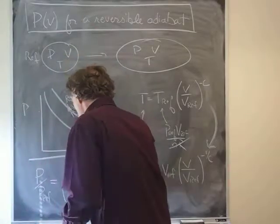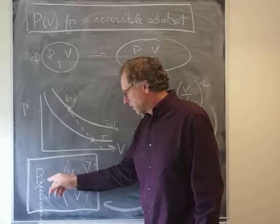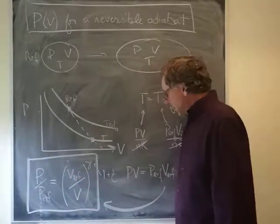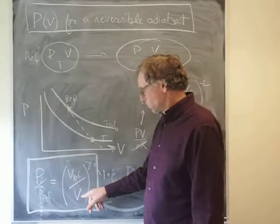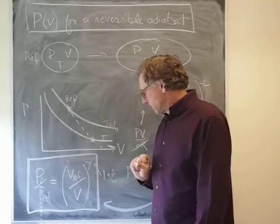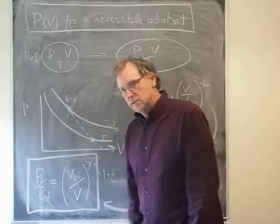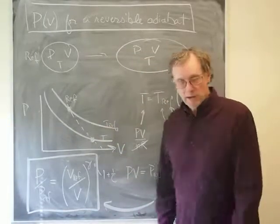And it just says the ratio of the final pressure to the reference pressure is equal to that quantity. And you can kind of see that, since we're assuming that this is an expansion, that volume is bigger than that volume, and therefore the final pressure is going to be lower than the starting pressure, which you can see from there.